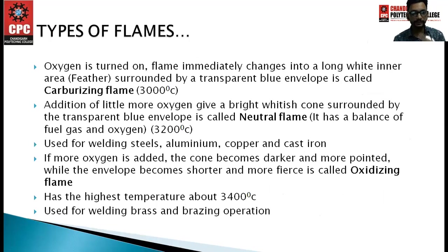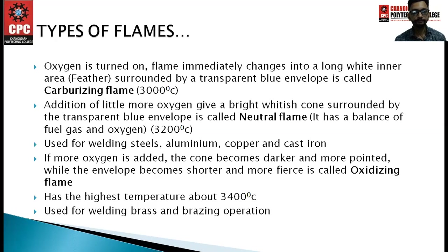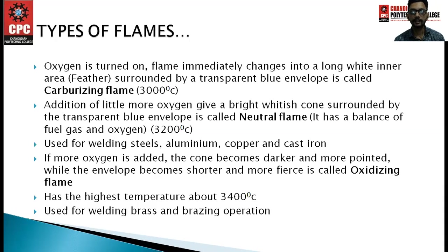Types of flame: when oxygen is turned on, the flame changes into a long white inner area with a feather area surrounded by a transparent blue envelope — this is called a carburizing flame, with a temperature of 3000 degrees Celsius. Adding a little more oxygen gives a bright whitish cone surrounded by a transparent blue envelope, called a neutral flame, with a peak temperature of 3200 degrees Celsius.